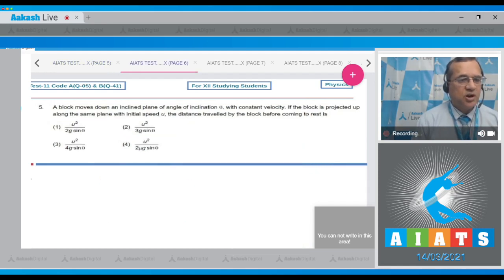Question number five says that a block moves down an inclined plane of angle of inclination theta with constant velocity. If the block is projected up along the same plane with initial velocity u, find the distance traveled by the block before coming to rest. These are four options.